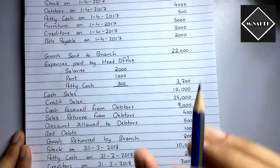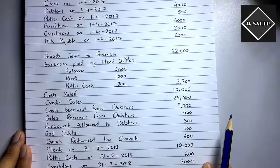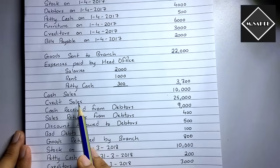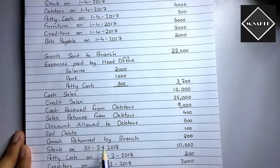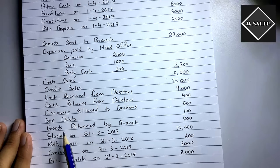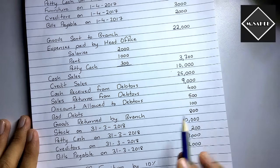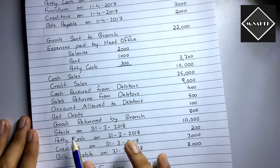Cash received from debtors is taken into the branch account. Credit sales, sales returns from debtors, discount allowed to debtors, and bad debts — these four items will not be taken into the branch account; they will be adjusted in the debtors account. Goods returned by branch means the branch couldn't sell some goods and returns them to the head office, so that is credited in the branch account as 'By Goods Sent to Branch'.